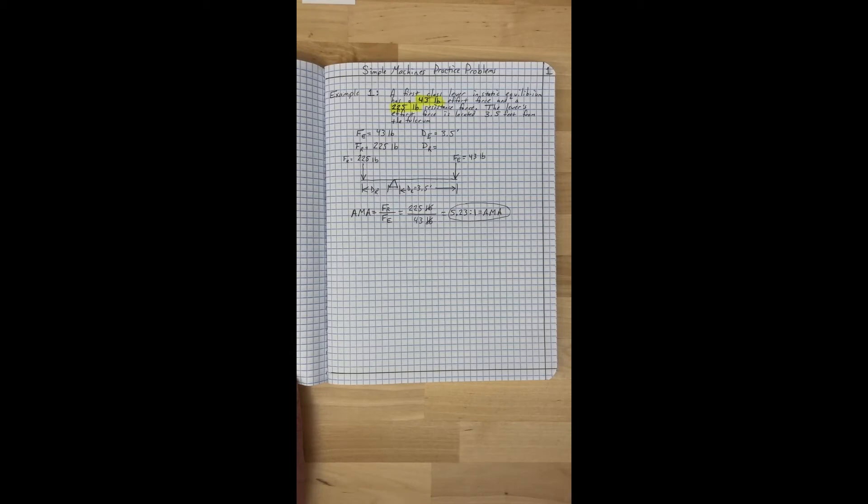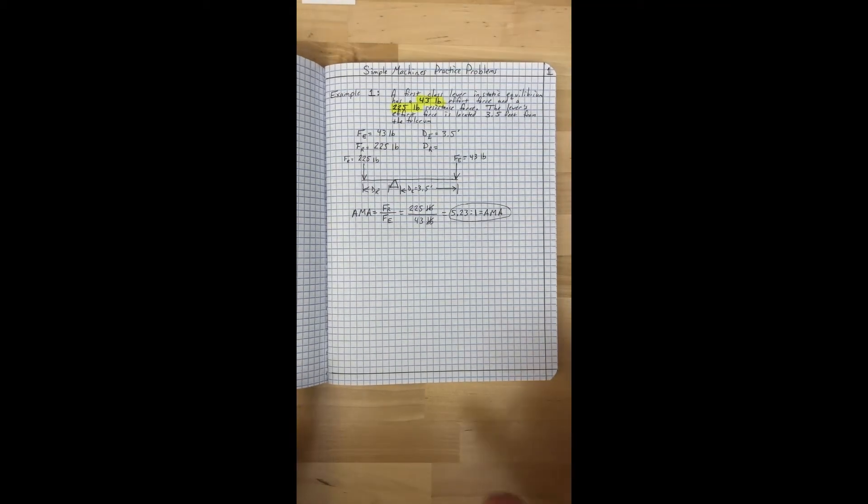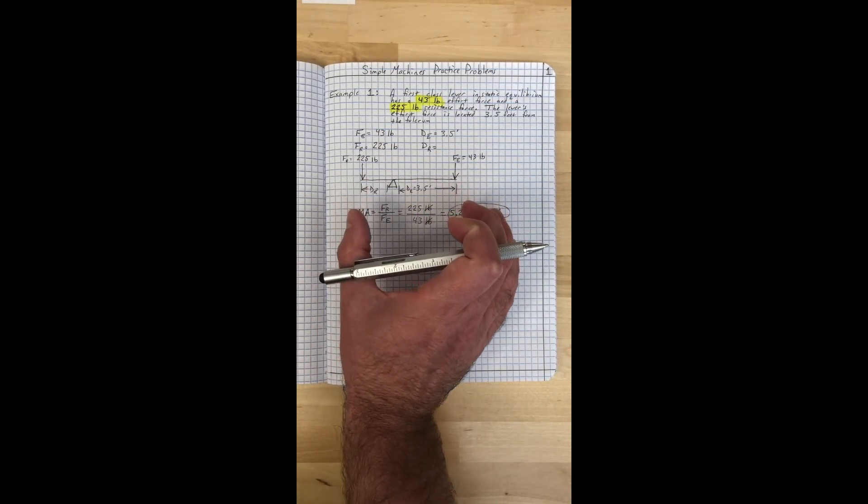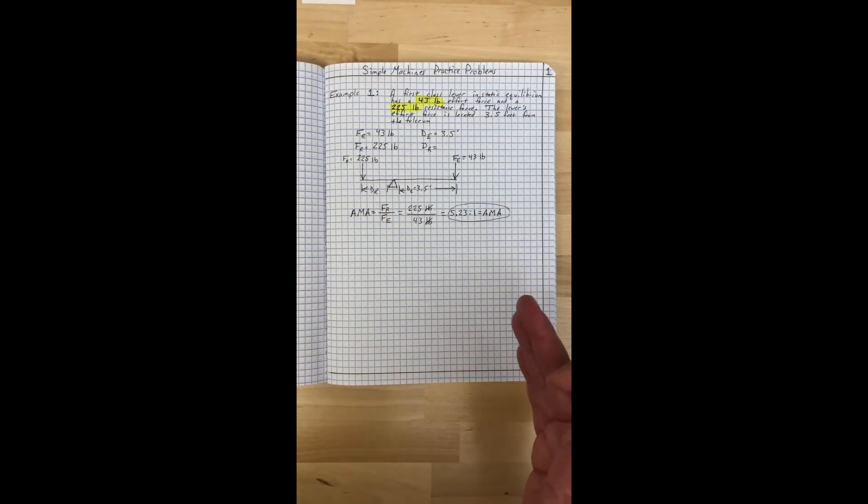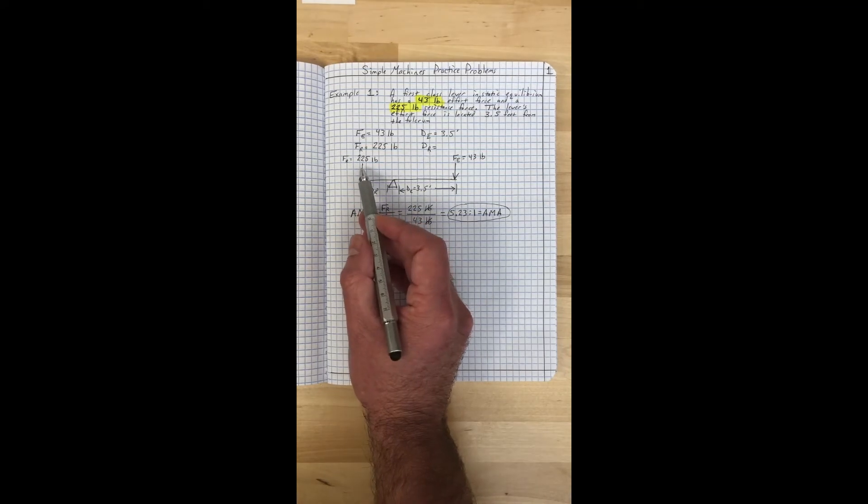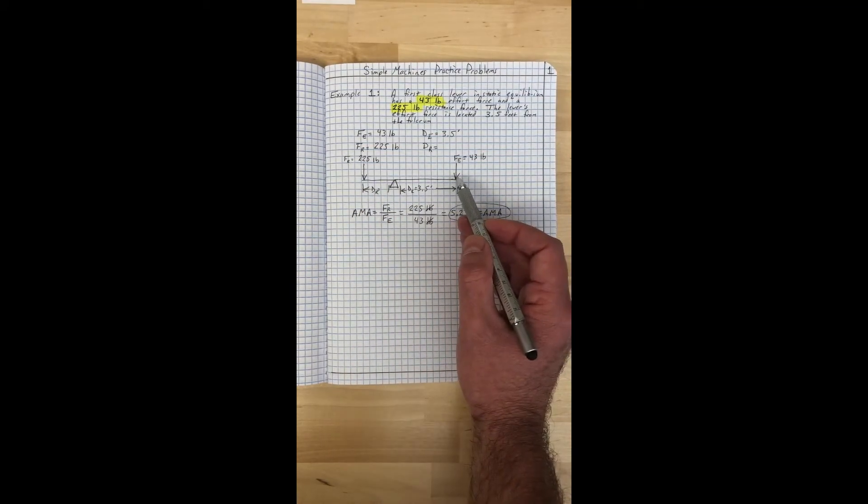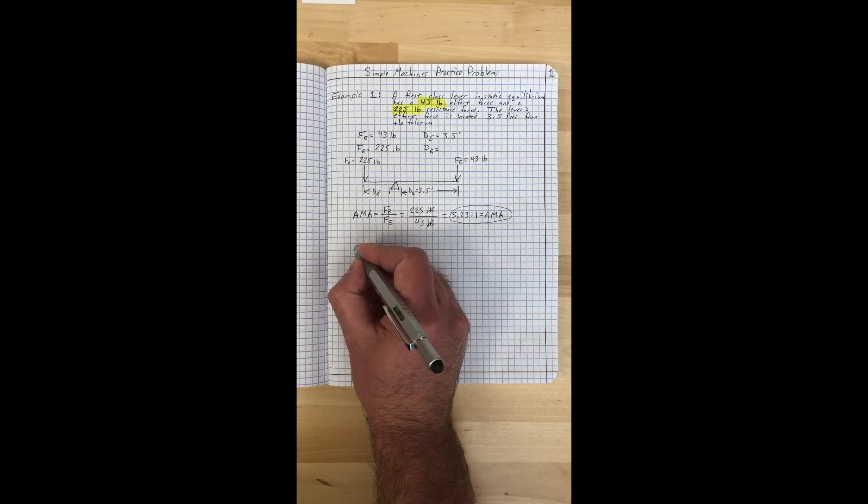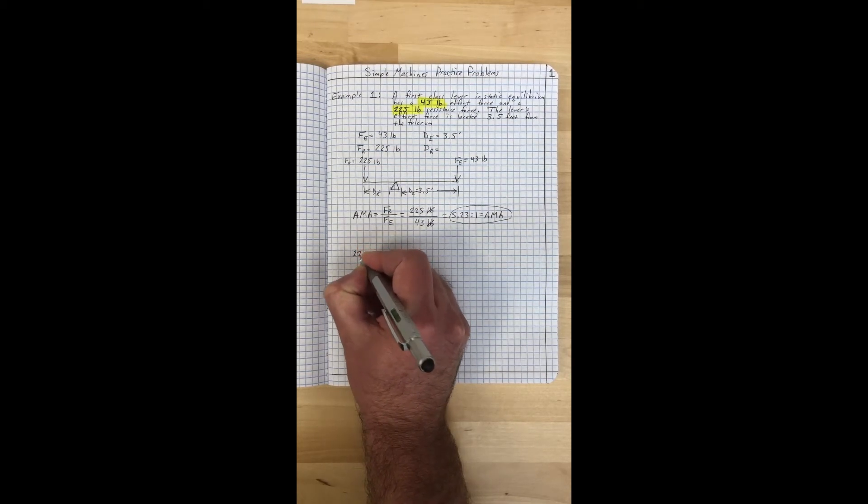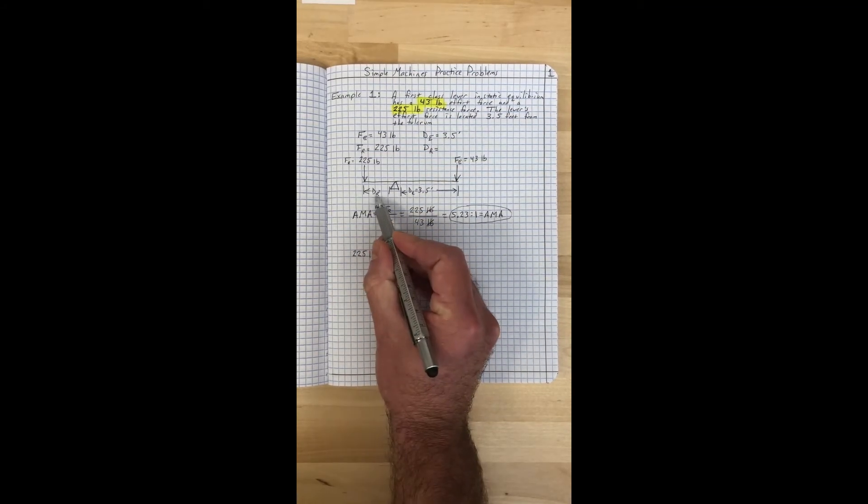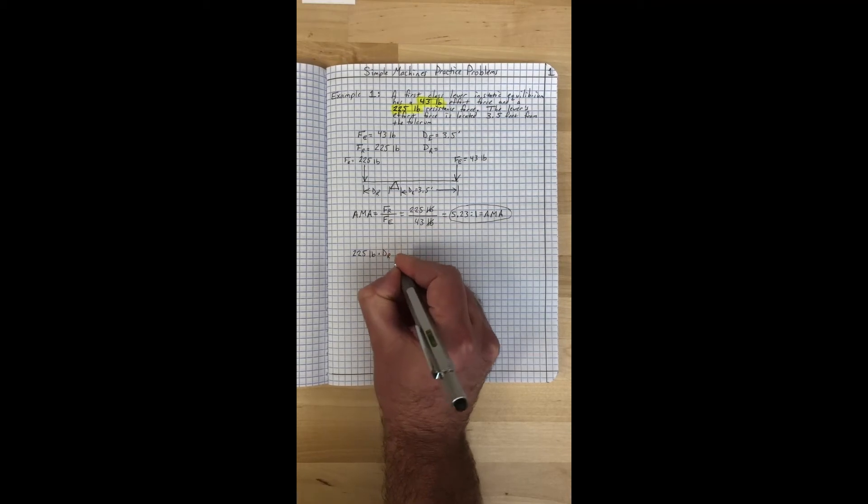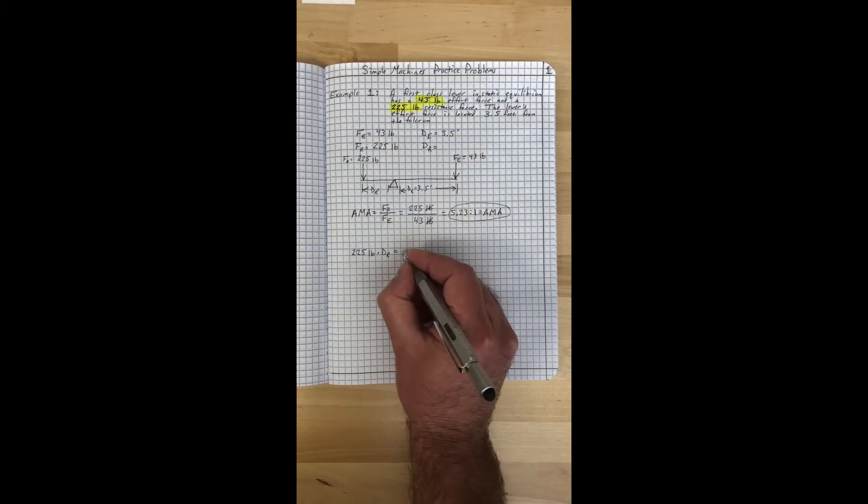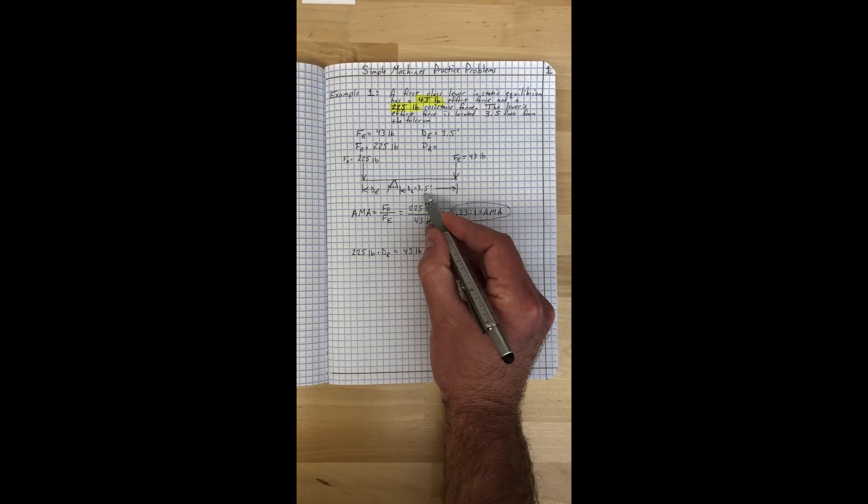The next step of the problem is using equations for static equilibrium. We're assuming that this is not going to be moving at all, it's perfectly balanced. This is where we get into a moment calculation, so it's going to be force times distance on one side equals force times distance on the other side. We're going to take the resistance force, which is 225 pounds, times the resistance distance, and we're going to set that equal to the effort force times the effort distance.